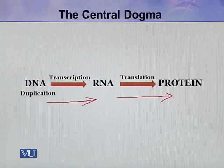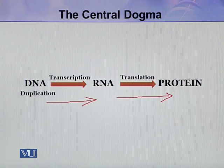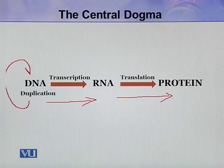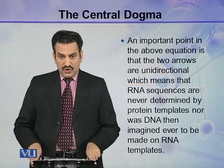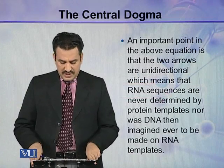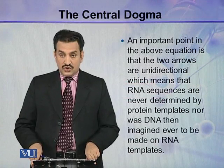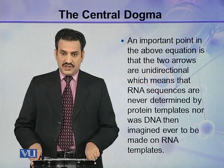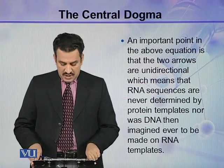This flow describes what happens during the growth of cells. However, for cell division, the DNA must be copied from pre-existing DNA. An important point is that the two arrows in this pathway are unidirectional.